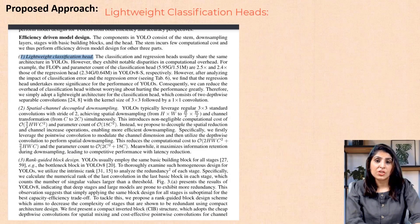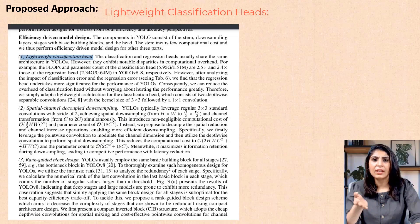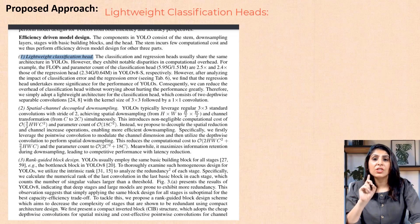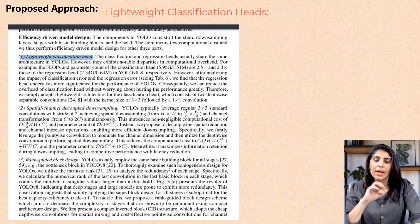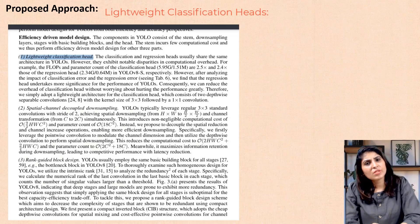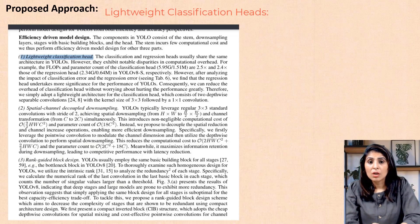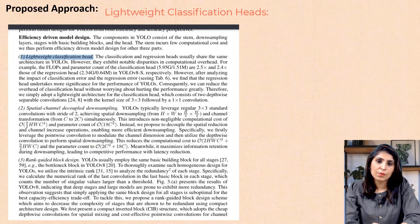The next feature is lightweight classification heads. Classification heads are the final layers in the neural network that assign labels to detected objects. Lightweight classification heads are designed to be efficient, reducing the computational burden without compromising accuracy. I'm still going through the paper, but these are the features I found most useful to discuss. If you liked this content, please like, share, and subscribe. Thank you for watching.